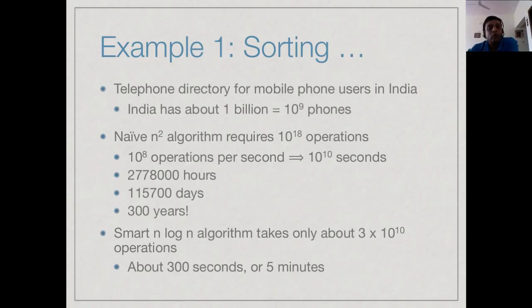So how much is 10 to the 10 seconds? Well, it's about 2.8 million hours, about 115,000 days, and that's about 300 years. So you can imagine that if we really want to do this using an n square algorithm, it would not be practical because it would take more than our lifetime, more than several generations in fact, to compute this on the current hardware.